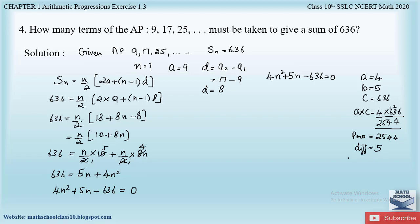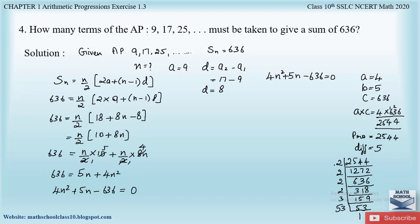Factorizing 2544: dividing repeatedly by 2 gives 2 × 2 × 2 × 2 × 3 × 53. Grouping these factors: 48 × 53 = 2544, and 53 − 48 = 5. So the two numbers are 53 and 48.